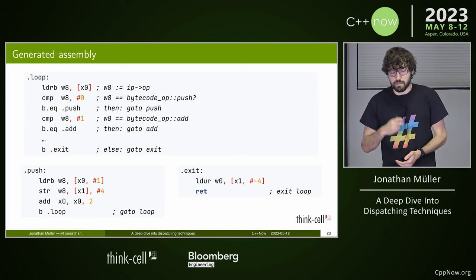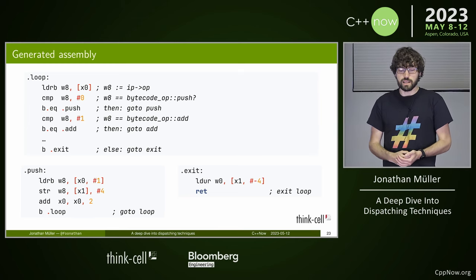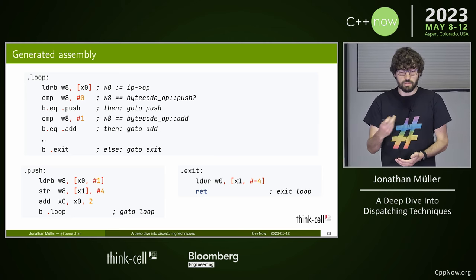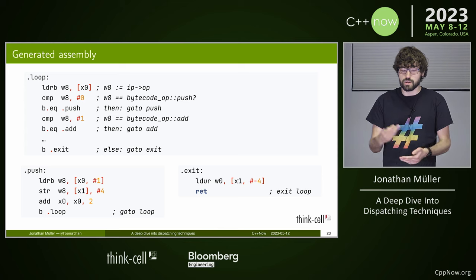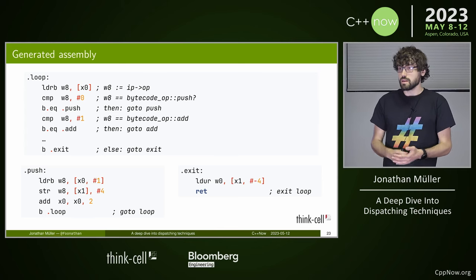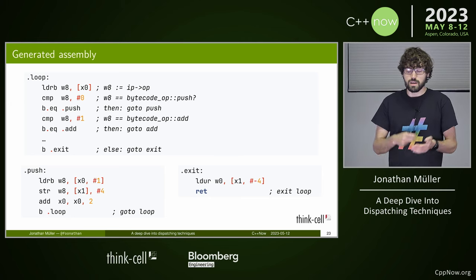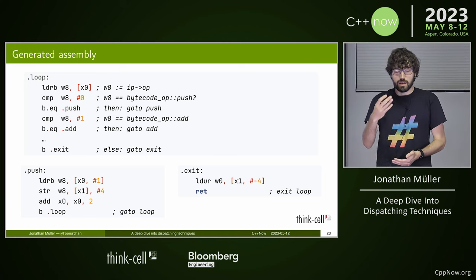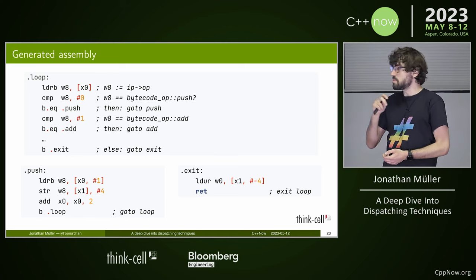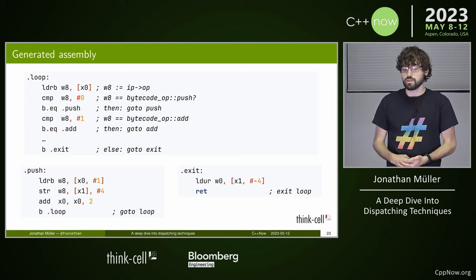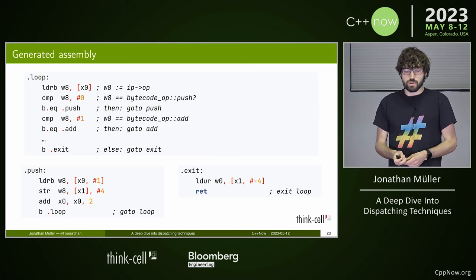Looking at the assembly of our switch statement: the loop begins at a label, we read the current opcode, compare against 0 (go to push), compare against 1 (go to add), and so on. Each instruction handler has a few assembly instructions. Push reads the next byte in the bytecode as a register, stores it onto the VStack with post-increment, then increments the instruction pointer by two and goes back to the beginning. When we reach exit, we load the final value and return.